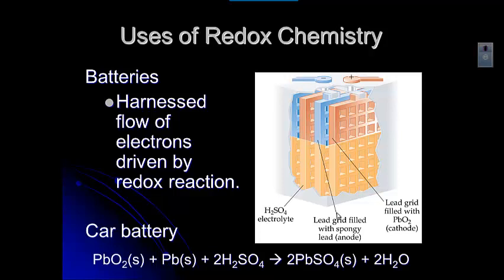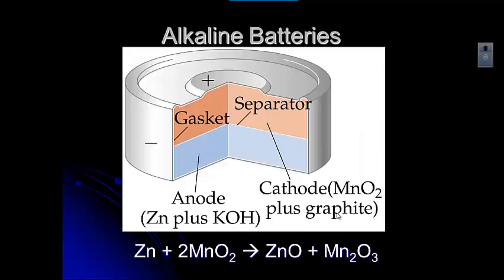If you ever go to have your battery changed, the person doing that will usually put on some safety glasses and gloves and maybe even an apron to protect themselves because they can get the acid on themselves. But you can see that through that reaction of lead oxide plus lead plus sulfuric acid, those electrons are able to move around to make the battery useful for your car.